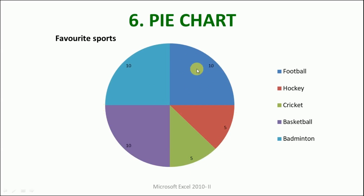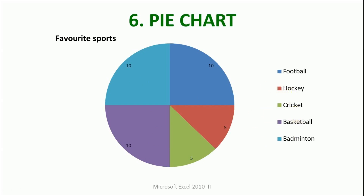Looking at the chart, the blue is representing football — 10 students in football, 10 students in badminton, 10 students in basketball, 5 in cricket, and 5 in hockey. Now let's learn how we can create the pie chart.